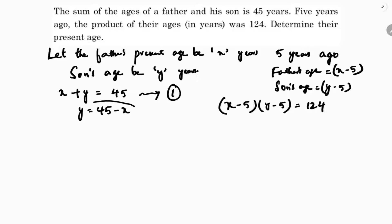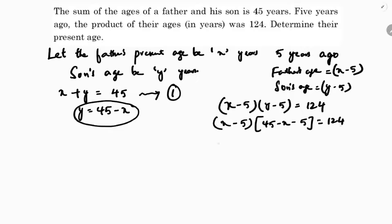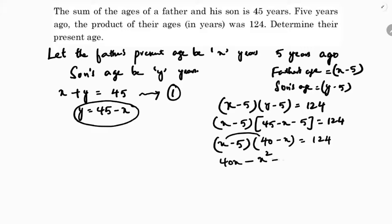We substitute y equals 45 minus x into the second equation. So x minus 5 into 45 minus x minus 5 equals 124. Expanding: x into 40 is 40x, x into minus x is minus x squared, minus 5 into 40 is minus 200, minus 5 into minus x is plus 5x, equals 124.